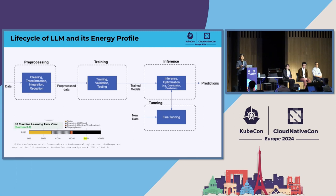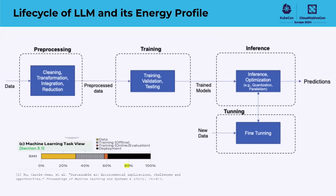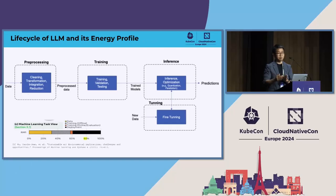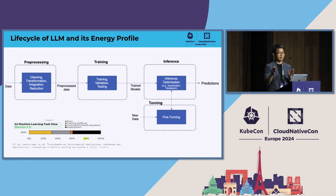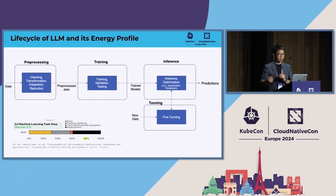You might wonder how much energy each phase consumes. A recent Facebook paper shows that the yellow part of the graph is pre-processing, the gray part is training, and the black part is inferencing or deployment. Because inferencing is large, and if you reuse the model over time, energy consumption for that model is actually more on the inference side than training.